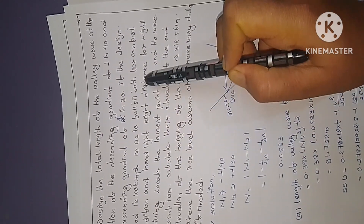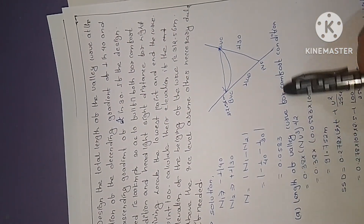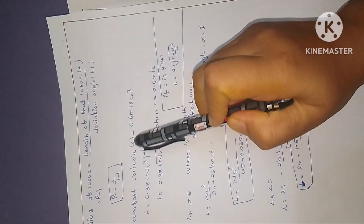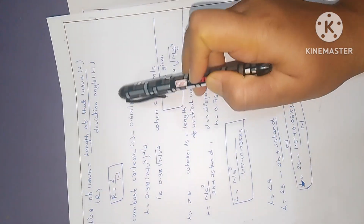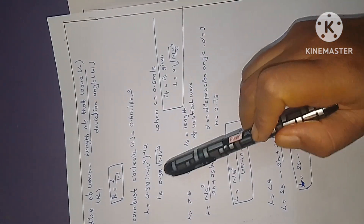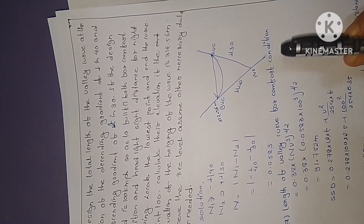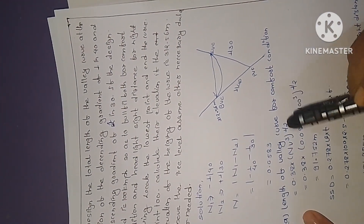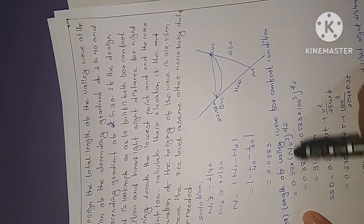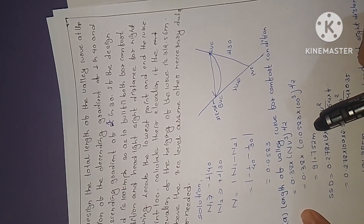We need to check both the comfort condition and the headlight sight distance condition. First, applying the comfort formula: C equals 0.6 m/s³, and the formula is L equals 0.38 V³ divided by C times N to find the length of the valley curve.